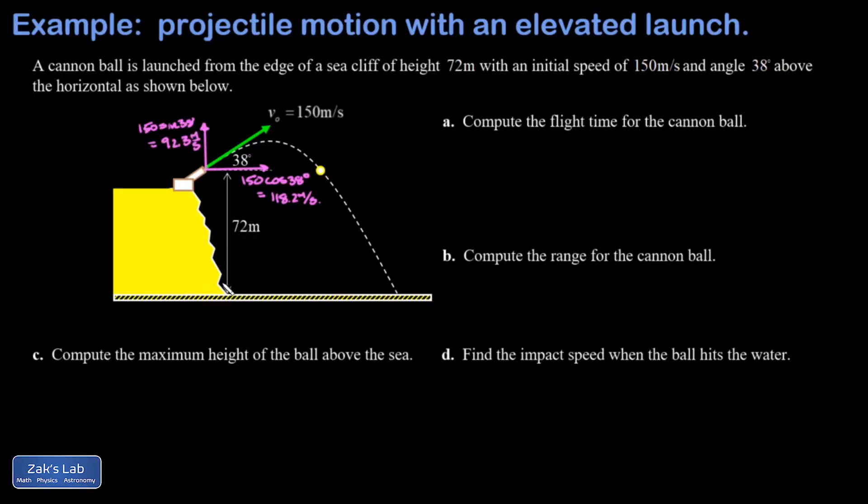One last thing I'll do as prep work is very clearly label what my origin is. I want to call the initial x position zero, and I'm going to make sea level the origin of coordinates for the y coordinate. In part a I'm asked for the flight time of the cannonball. Because I know the final y position when this thing lands, I have extra information about the vertical analysis, and that's how I know to start this question by looking at the vertical analysis.